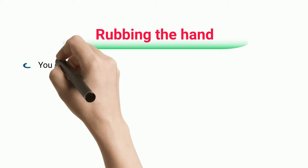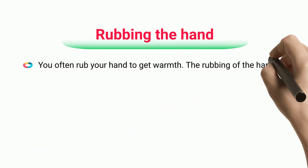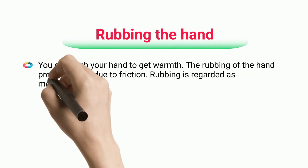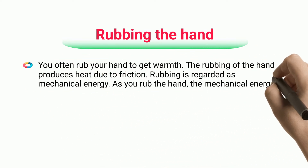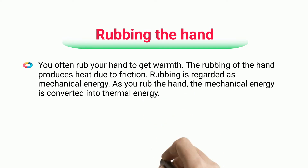Rubbing the Hand. You often rub your hands to get warmth. The rubbing of the hands produces heat due to friction. Rubbing is regarded as mechanical energy. As you rub your hands, the mechanical energy is converted into thermal energy.